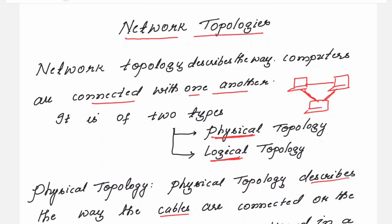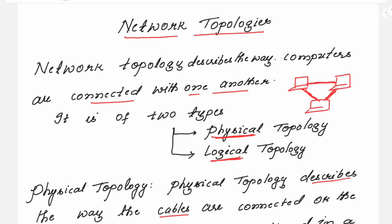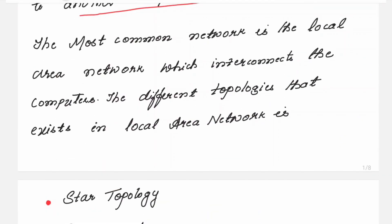If you look at this diagram, the way the computers are connected using the cable is the physical topology. The way the data is flowing between the computers describes the logical topology — whether the data is flowing from one PC to another directly, or via a centralized device where the data first travels to some centralized device and from there flows to the next PC. There are various ways in which data flows between the PCs, and those are described under the logical topology.